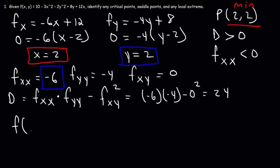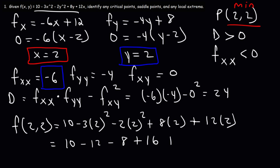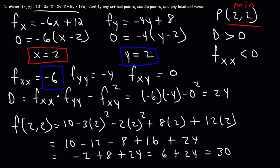The last thing we need to do is evaluate that point at the function. We're going to plug in x equals 2 and y equals 2. So this is 10 minus 3 times 4 minus 2 times 4 plus 8 times 2 plus 12 times 2. That's 10 minus 12 is negative 2, negative 8 plus 16 is positive 8, negative 2 plus 8 is 6, and 6 plus 24 is 30. So the point (2, 2) is a local minimum with a value of 30.